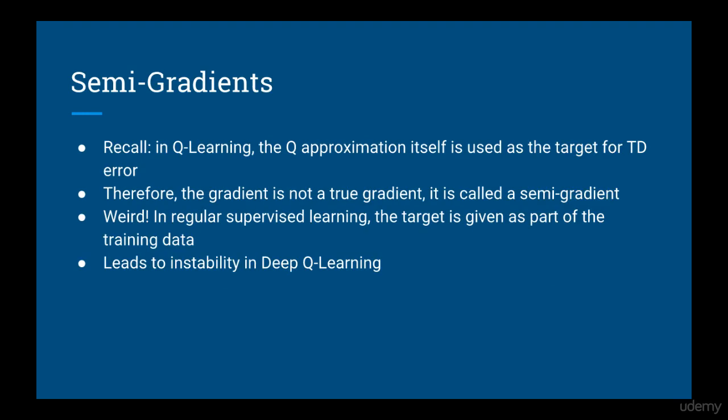The next trick is related to something we learned about in the previous reinforcement learning course. Recall that queue learning is a temporal difference method. Temporal difference methods use the value function itself as the target return. This is weird because, in regular supervised learning, the target is always given as part of the training data. You would never have to estimate it. Because of this, when we do gradient descent, it's not a true gradient. We call it a semi-gradient. For deep queue learning, this also leads to instability.